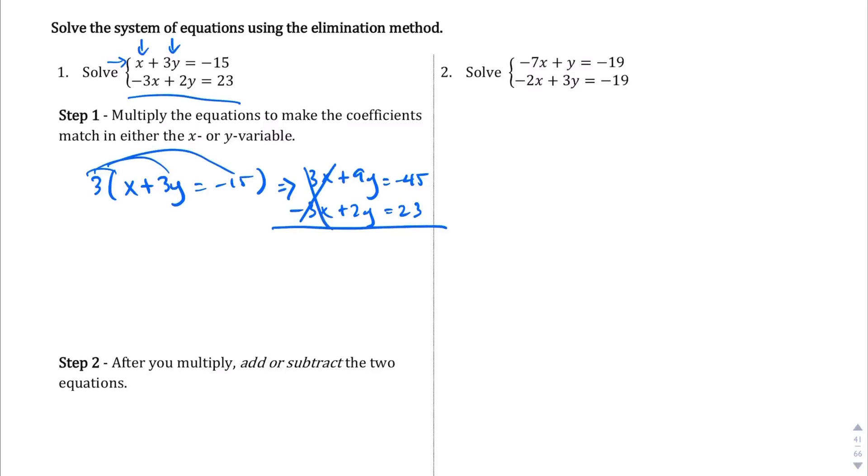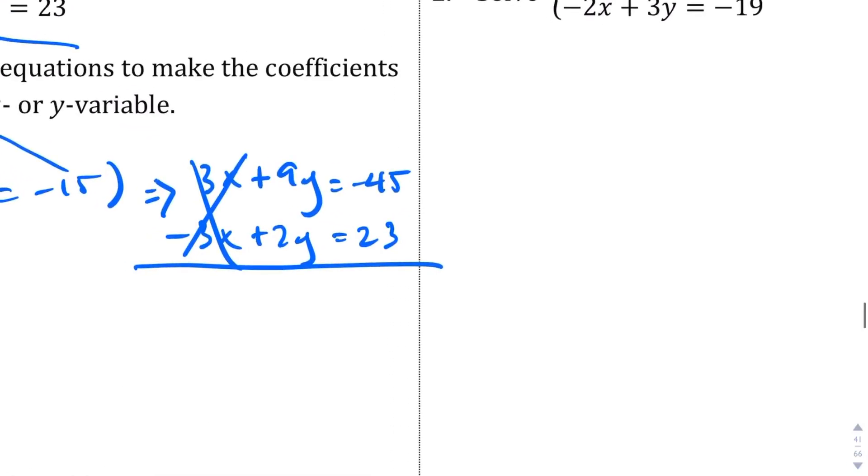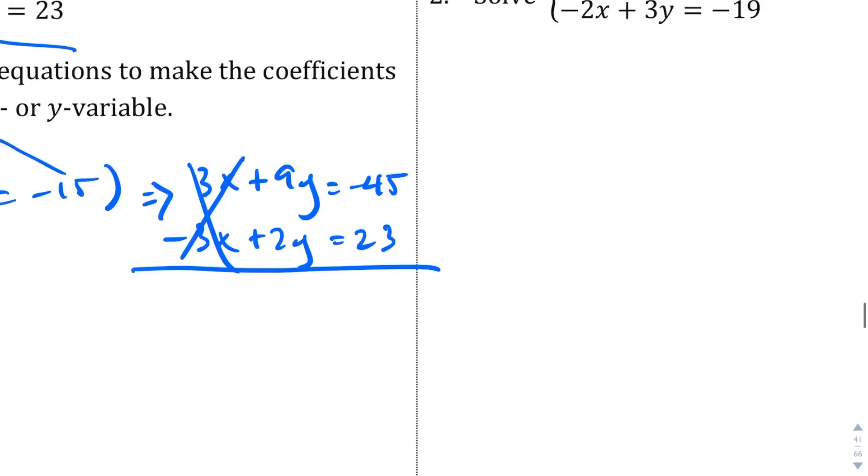When we add them together, this gets rid of the x's. Let me zoom in here just so you can see a little bit better. 9y plus 2y gives me 11y. And then negative 45 plus 23 gives me negative 22. Divide both sides by 11, and I end up with y equals negative 2. So that's, well, I shouldn't box it. That's not my answer just yet.